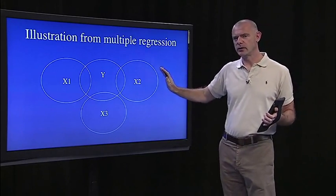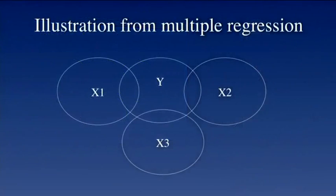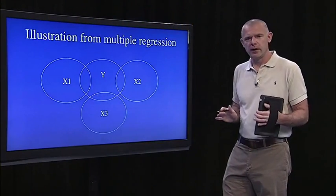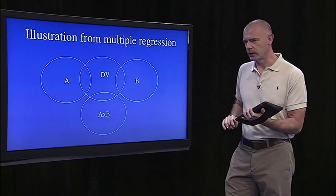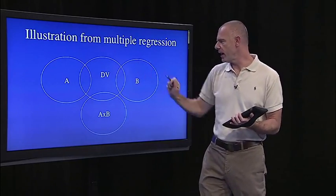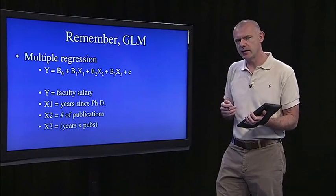Remember back in multiple regression, we could represent the variance a little bit differently. Here's the variance in the outcome variable Y, and we have three predictors now: X1, X2, and X3, with no overlap between them - that's by design. In our new notation, those are independent variable A, B, and the interaction. Remember, this is all just a general linear model. In multiple regression, we had three predictors, and one of the examples I used was predicting faculty salary from years since PhD and number of publications, and we could test for a moderation effect by creating a product term as a third predictor. That's exactly what we're doing here.